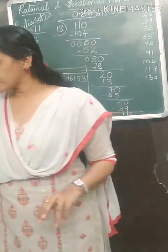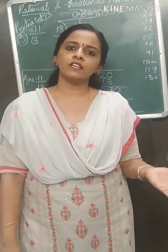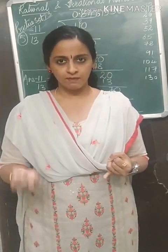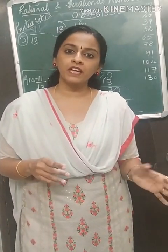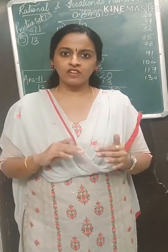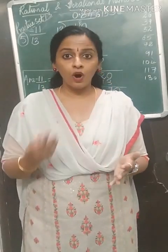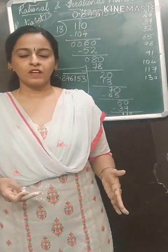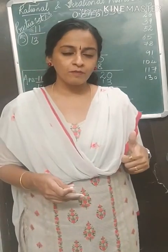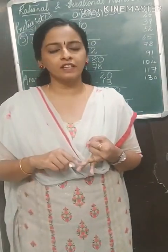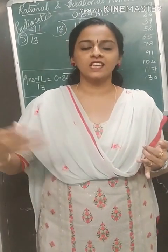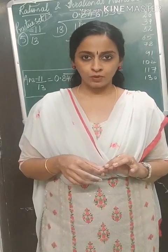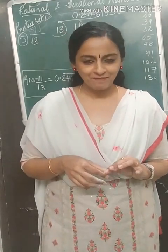We have completed practice set 1.3. What did we learn? Rational numbers can be represented in decimal form, and that decimal form can be terminating — where the division ends — or non-terminating recurring decimal form, where the digits keep repeating. So rational numbers in decimal form are either terminating or non-terminating recurring. Solve more examples. Till we meet next time, bye students.